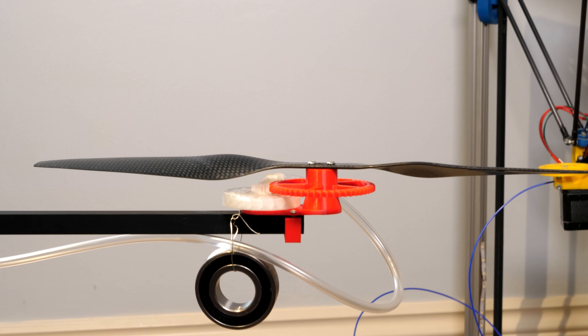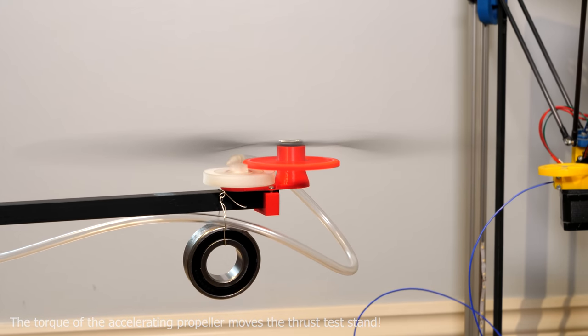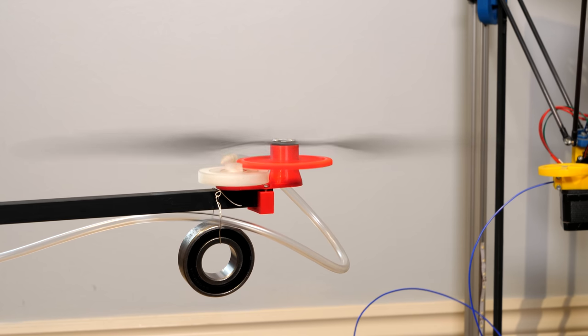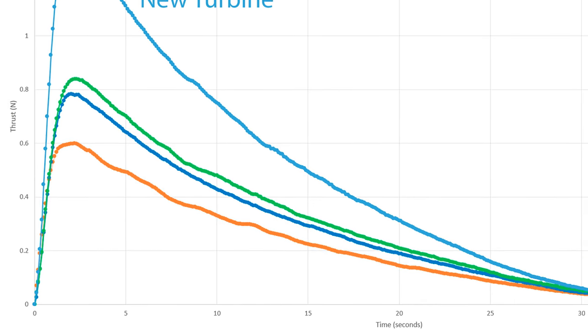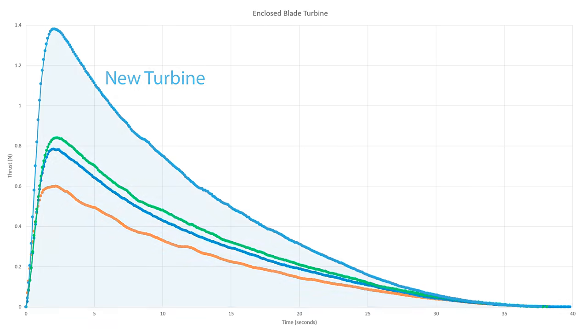With the exact same pressure and nozzle, this new turbine produced a peak thrust of 1.37 newtons, which is 65% more than the same size Pelton wheel turbine. So it's now clear why Pelton wheel turbines are almost completely exclusive to water flow. Also, if we measure the area under the graph, we get the turbine's impulse, which is essentially a measurement of its efficiency. This turbine produces an impulse of 15.7 newton seconds.